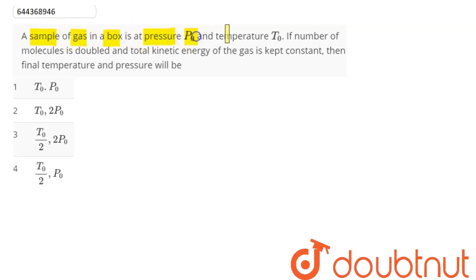in a box is at pressure P₀ and temperature T₀. If number of molecules is doubled and total kinetic energy of the gas is kept constant, then final temperature and pressure will be?